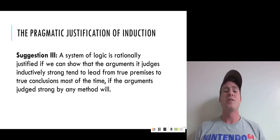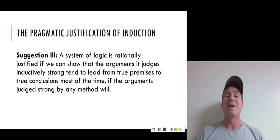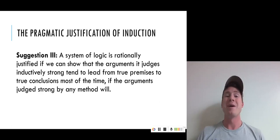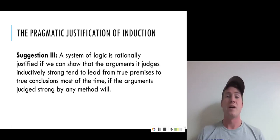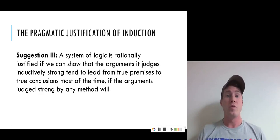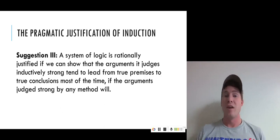Suggestion three: a system of inductive logic is rationally justified if we can show that the arguments it judges inductively strong — those to which it assigns high inductive probability — tend to lead from true premises to true conclusions most of the time, if the arguments judged strong by any method do as well. That is to say, scientific inductive logic has to be shown to be optimal — at least as good as any other method. If any other method is successful or reliable, so too will be scientific inductive logic, even though it's possible that no method at all is reliable. Note that this is a weaker notion of justification than we had in suggestion one, but still a very interesting one, and one that would be significant if we could really show that scientific inductive logic is optimal.